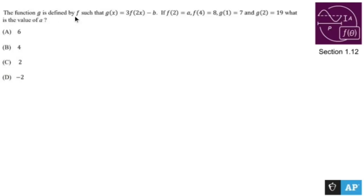The function g is defined by f such that g of x equals 3 times f of 2x minus b. If f of 2 is a, f of 4 is 8, g of 1 is 7, and g of 2 is 19, what is the value of a?